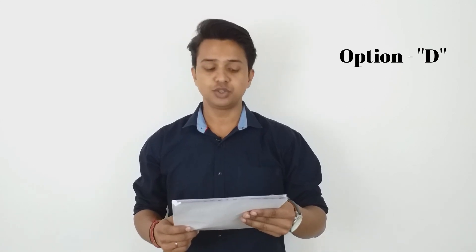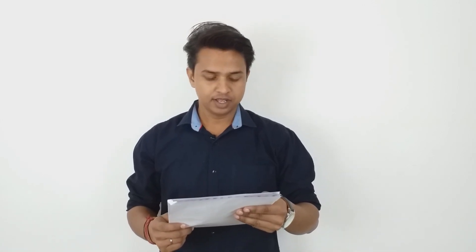Question 1: In a network shown, if the potential difference across XY is 4 volts, then the supply voltage across AB would be. The correct answer is option D, that is 12 volts.